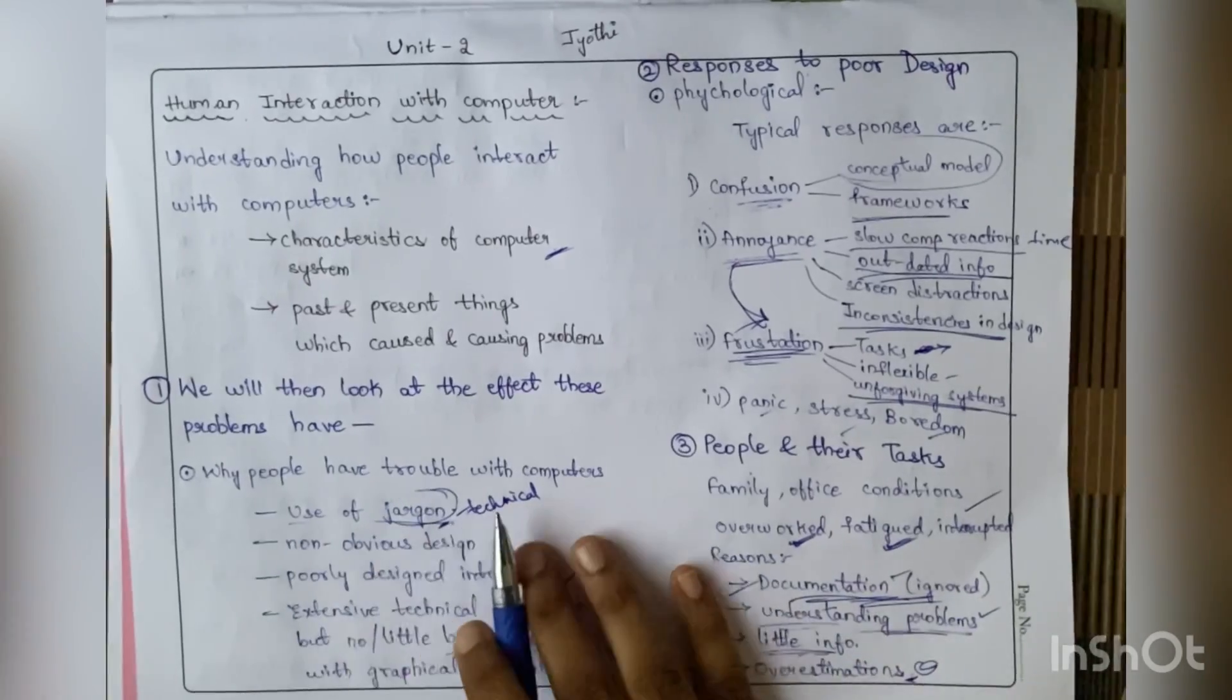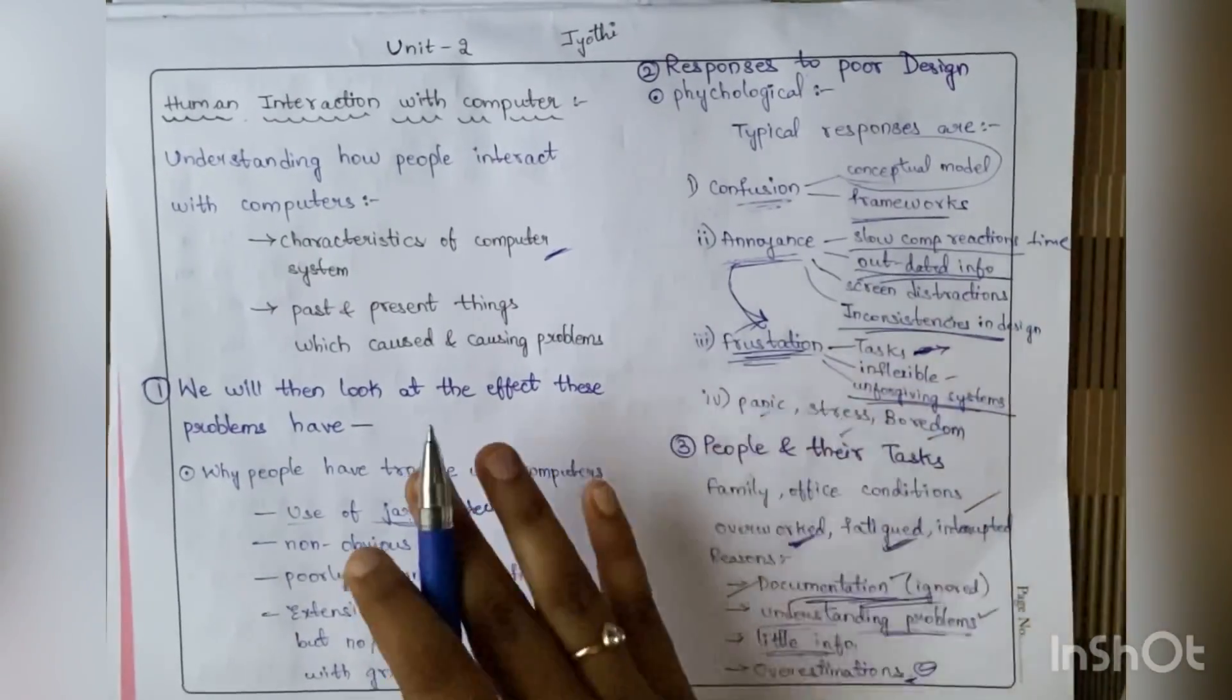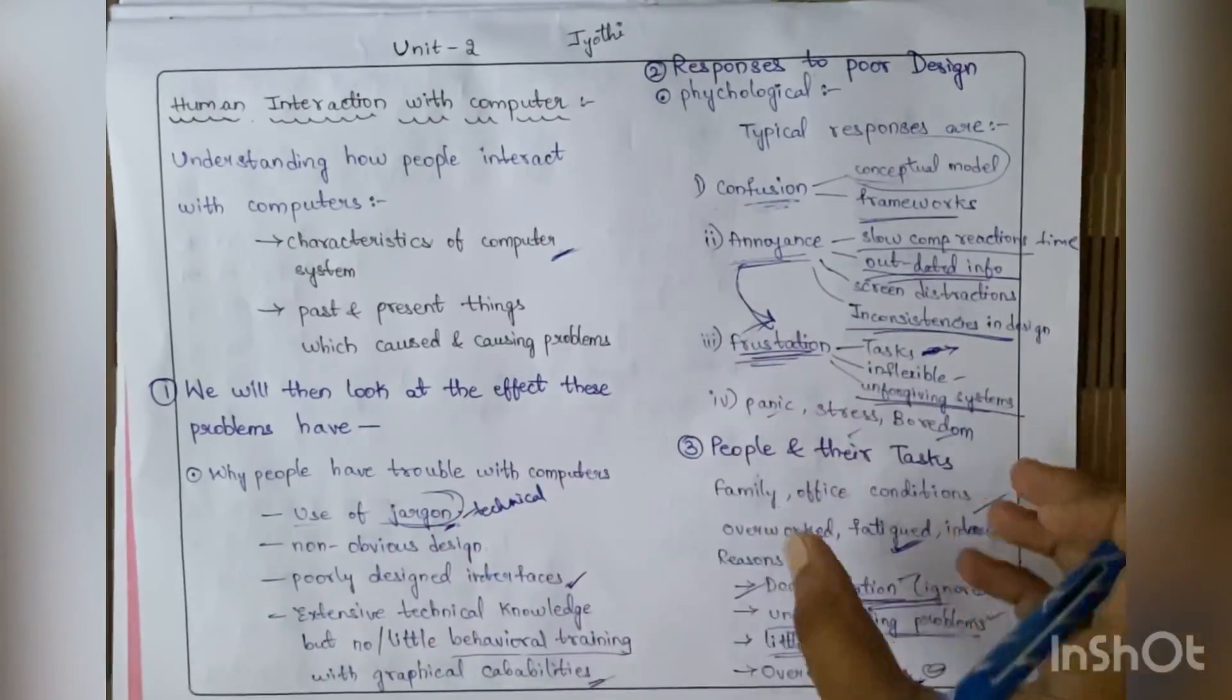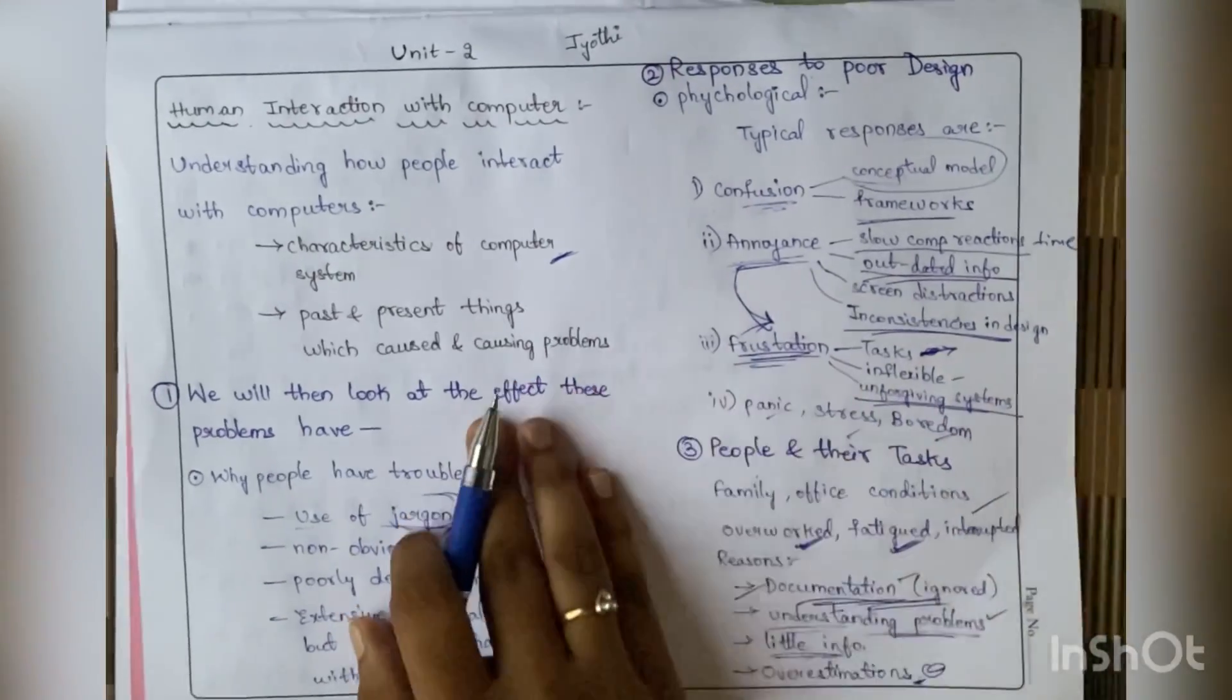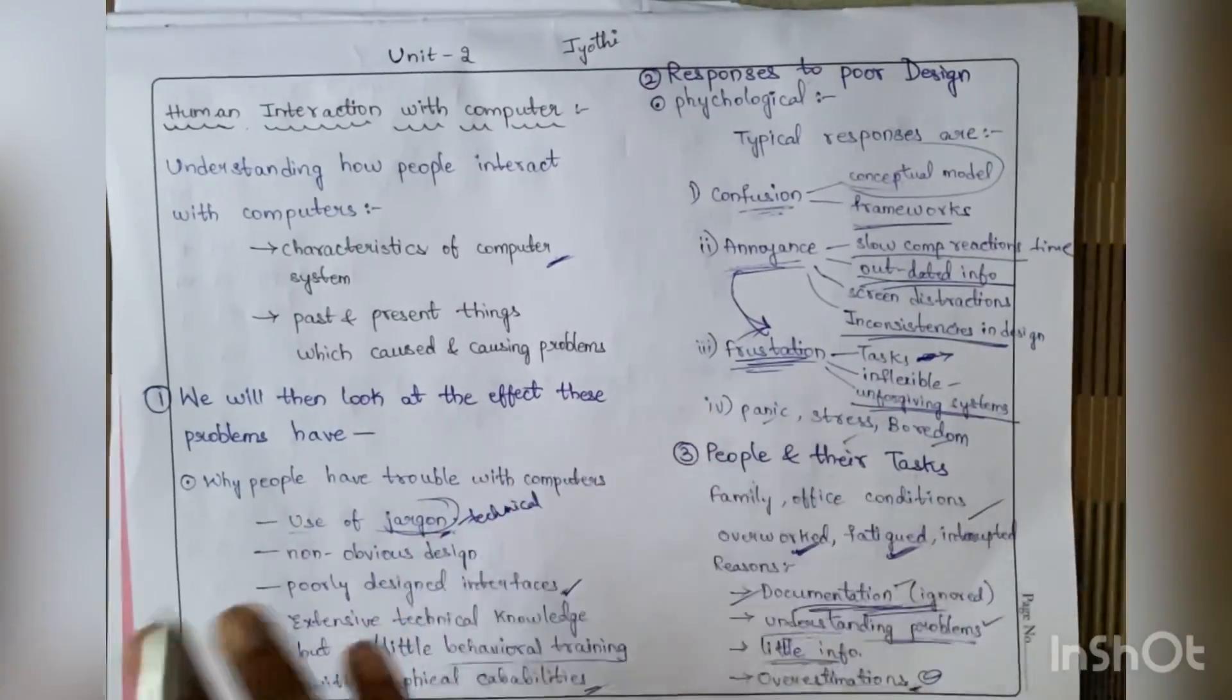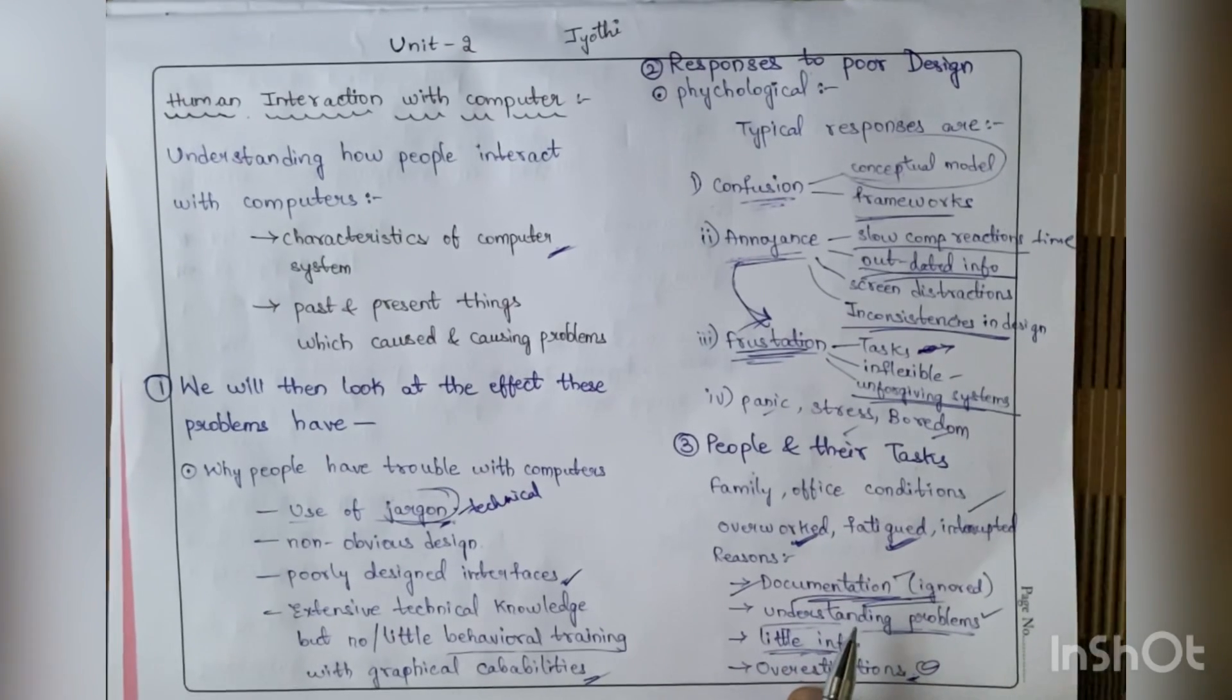Another thing is overestimations. This means our superiors think that we are in a position to do all the technical work, but because of these conditions we may not do properly. They estimate - they think that we can do anything. That means overestimation by our superiors.